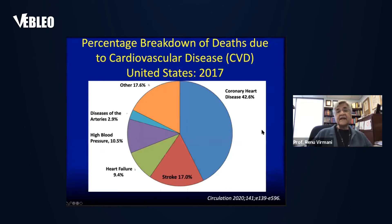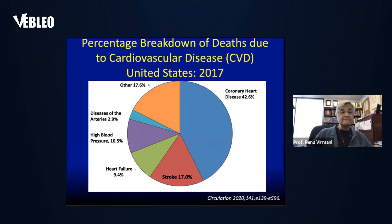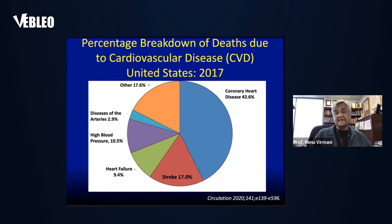Looking at the percent breakdown of deaths due to cardiovascular disease in the United States in 2017, coronary heart disease is the largest killer, followed by stroke, then heart failure, high blood pressure, diseases of other arteries, and other causes including valvular disease.